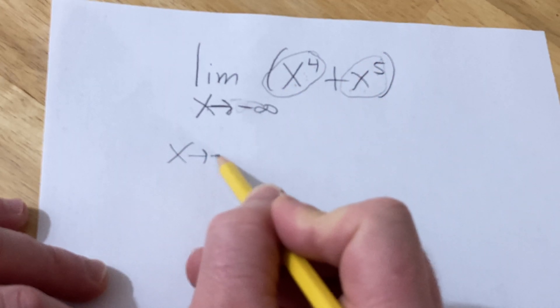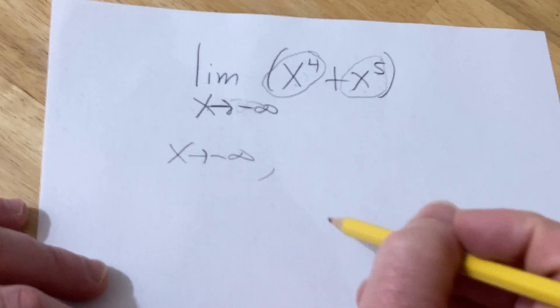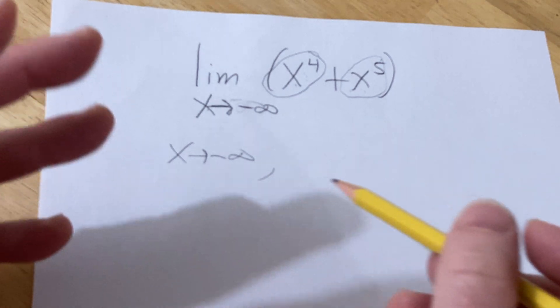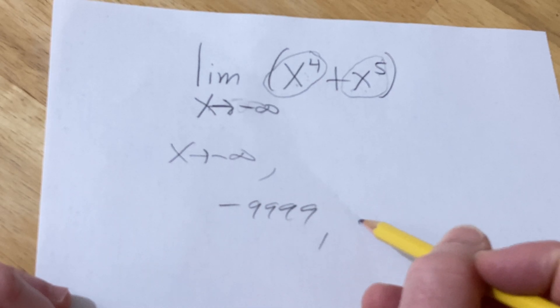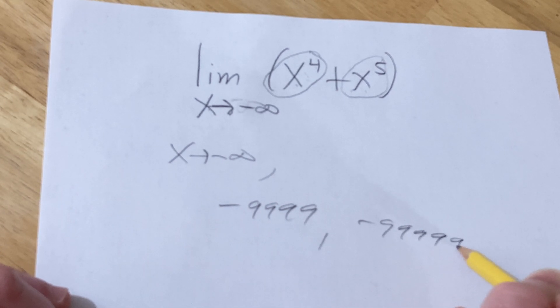Like when x approaches negative infinity, it's getting small forever. You can think of x at some point it's going to be this, and then at some point it's going to be this. And so basically, it's just going to get smaller and smaller and smaller and smaller.